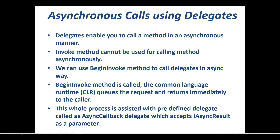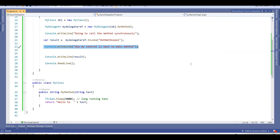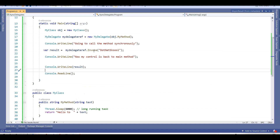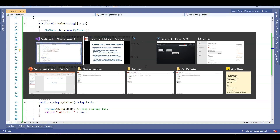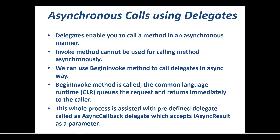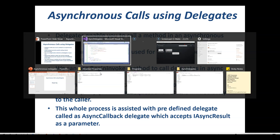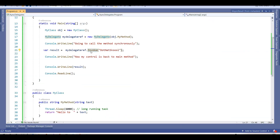Delegates enable you to call a method in an asynchronous manner. The Invoke method cannot be used for calling a method asynchronously — we've seen that in Visual Studio. We can use the BeginInvoke method to call delegates in an asynchronous way. Let's try to use BeginInvoke first.